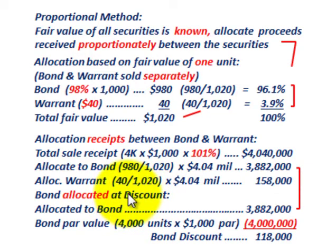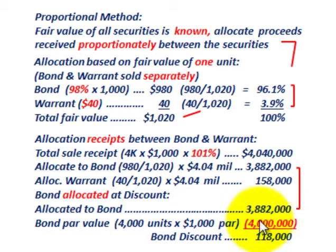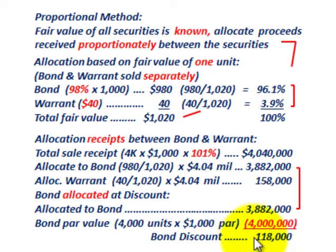Next, we deal with any discount or premium on the bond. In this case we have a discount — an allocated discount. The allocated amount to the bond is $3,882,000, and the bond's par value is 4,000 bonds at $1,000 par, so $4,000,000. Comparing par of $4,000,000 to the allocated amount of $3,882,000, we get a discount of $118,000, because the allocated amount was less than total par value.